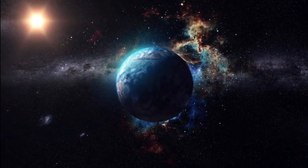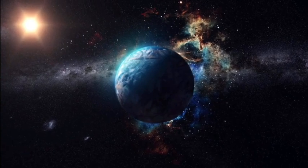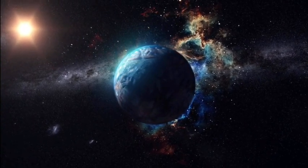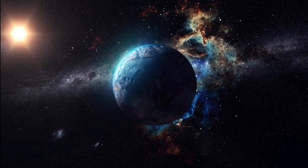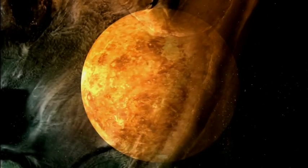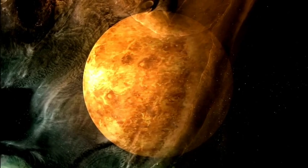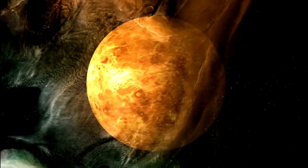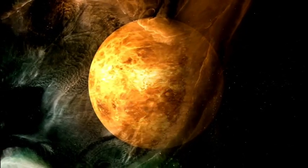Furthermore, the presence of a counter-Earth would affect the motions of all nearby objects in the solar system, allowing us to detect it. Conversely, the gravitational influence of nearby objects, such as Venus, would also affect the counter-Earth's orbit.